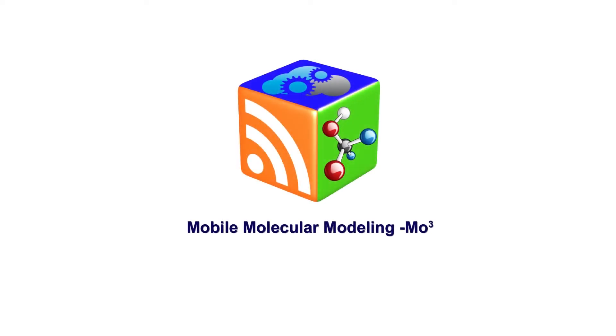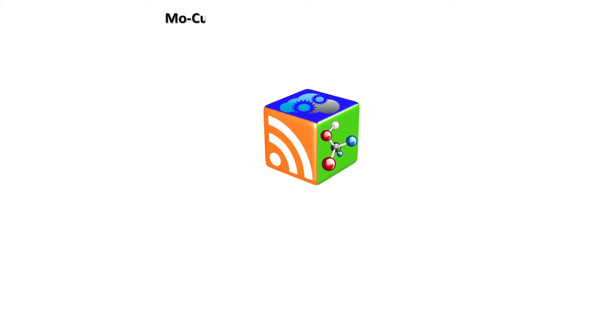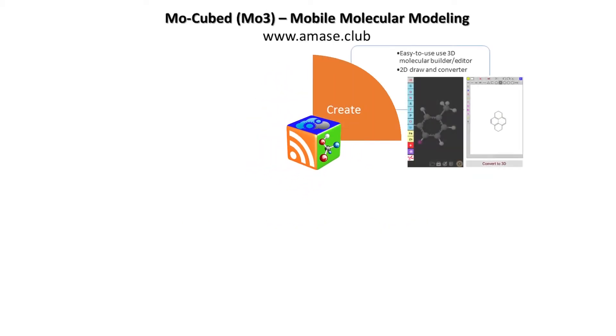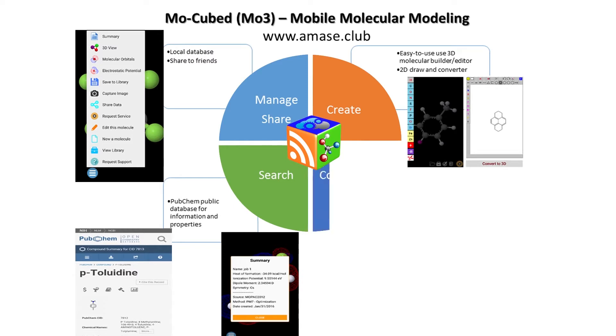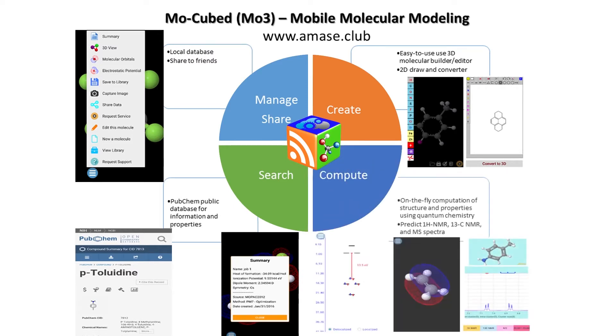MoCubed is the most comprehensive mobile solution for small molecule chemical information to date. The app can be used by teachers and students as an educational tool for all chemistry courses and by researchers computing physical or chemical properties of molecules using quantum chemistry in the cloud and for searching chemical information available on public databases.